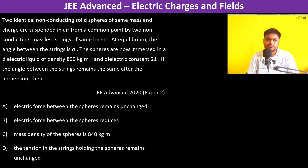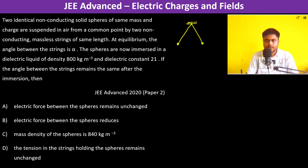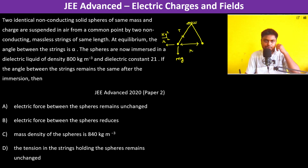Two identical non-conducting solid spheres of same mass and charge are suspended in air from a common point by two non-conducting massless strings of same length. At equilibrium the angle between the strings is alpha, so this angle is alpha, and therefore each string makes alpha by 2 with the vertical. The force balance gives t cos(α/2) = mg and t sin(α/2) = kq²/r², where r is the distance between them.